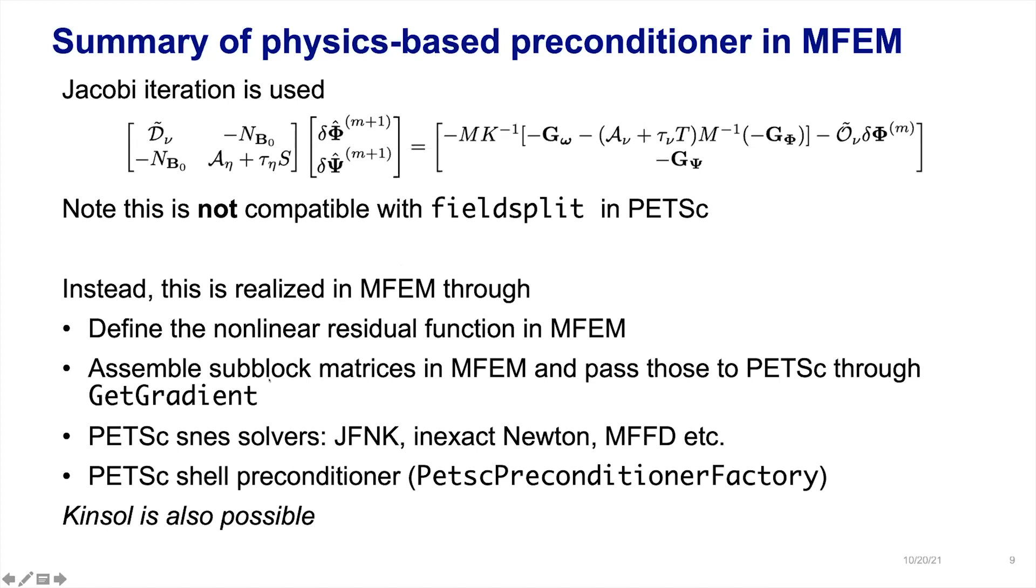We define G(u) = 0 and then assemble subblock matrices in MFEM and pass those to PETSc to get gradients. Then we use PETSc solvers: JFNK, inexact Newton, MFFD, etc. We use PETSc shell preconditioner. We collect all those small operators to form the action of this preconditioner using shell preconditioner, which in MFEM is called PetscPreconditionerFactory. Kinsol is also possible.